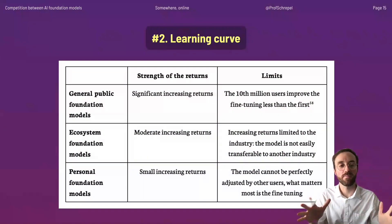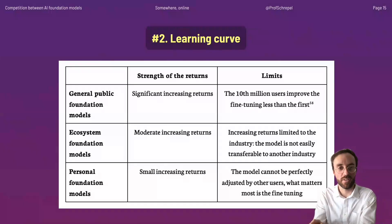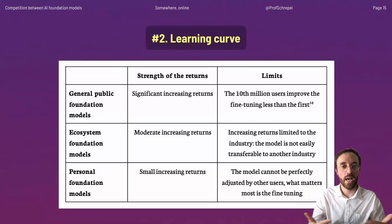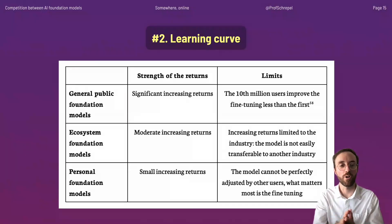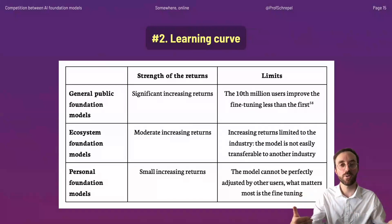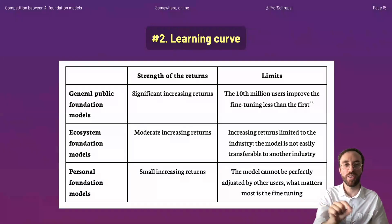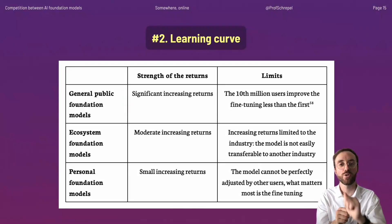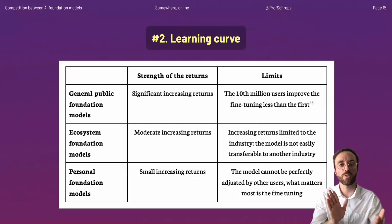For general public foundation models, the increasing returns from the learning curve are significant — more users attract more users, improve the service, and provide access to unique datasets. For ecosystem foundation models, the increasing returns are moderate, existing within the ecosystem but limited to one specific use case. For personal foundation models, the increasing returns are rather small, because it's much harder to deploy fine-tuning to other users — each individual, government, or company has specificities requiring more fine-tuning, reducing the ability to increase returns.